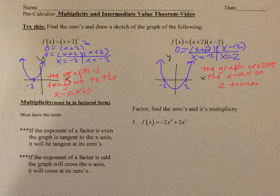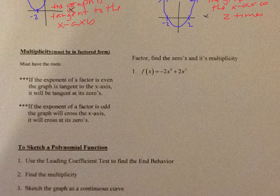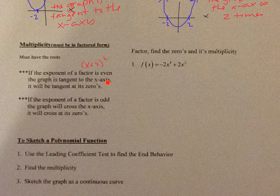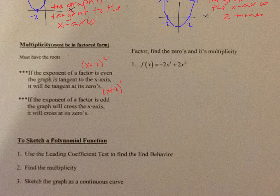Let's cover multiplicity. You must be in factored form to determine the multiplicity, because you need to know the exponent. If the exponent of a factor is even — like x plus 2 squared — your graph will be tangent to the x-axis at that zero. In this case, tangent at negative 2. If the exponent is odd — like just (x+2), where the exponent is really 1 — your graph will cross the x-axis at that zero, so it crosses at negative 2.